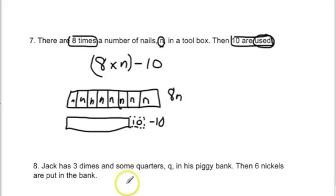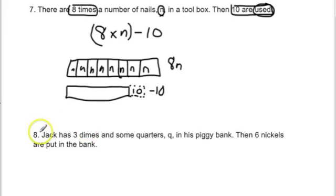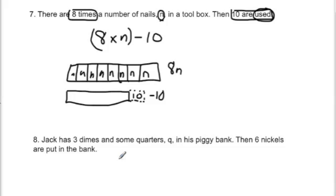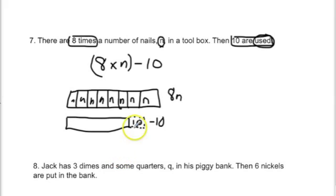Now look at example 8. Read it and see if you can figure out what it's asking. Write your algebraic expression — you know you're going to have two operations — and then model it. Remember to log into Edmodo and let me know you watched the video. Make sure you do your homework assignment along with your WISC. Try to go back and look at all parts of this video and put helpful things down in your journal. See you in class.